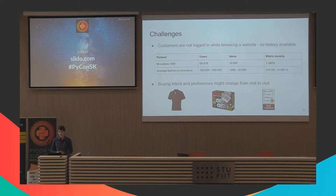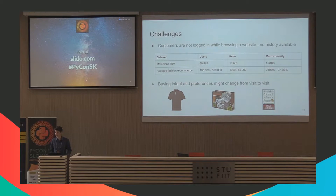In e-commerce, buying intent and preferences of users can change from visit to visit. For example, on one visit I might want to buy clothes, on my next visit I might be interested in a gaming console, and the week after I want to buy a present for a birthday party. Each of these is a completely different intent, so collaborative filtering struggles to keep up.